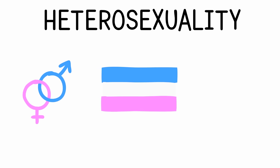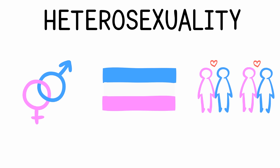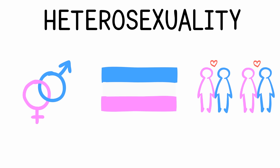3. Heterosexuality. Heterosexuality is probably the most well-known sexuality, and whether right or wrong, it is often thought of as the default. This is known as heteronormativity. It means attraction to genders other than your own, and is most commonly used to refer to binary genders.